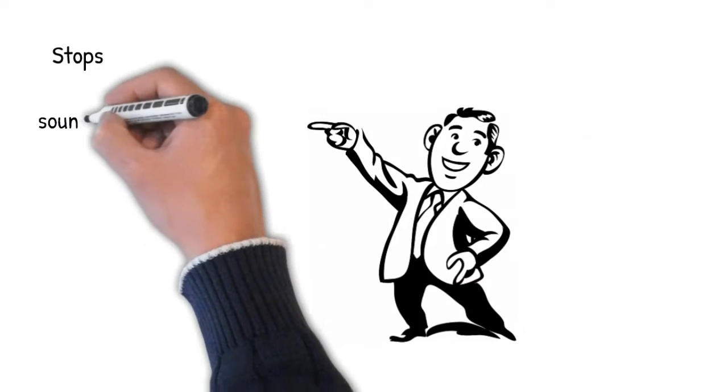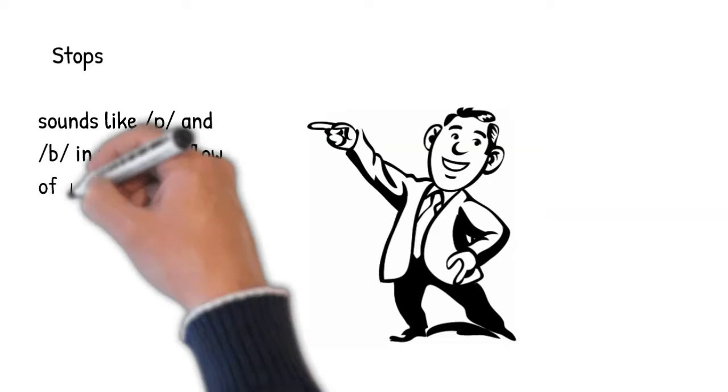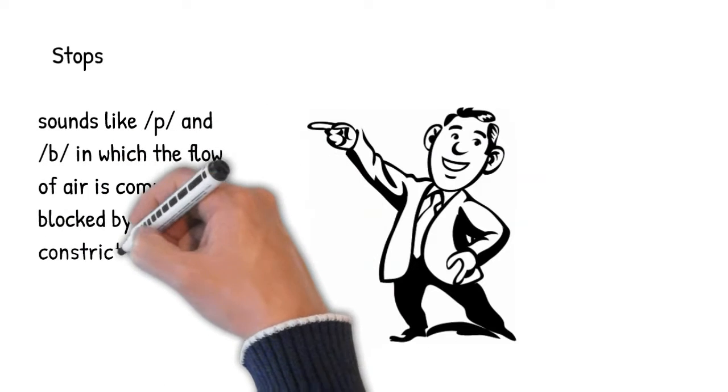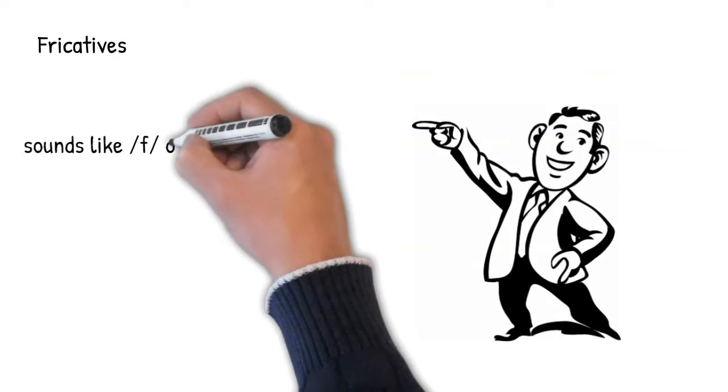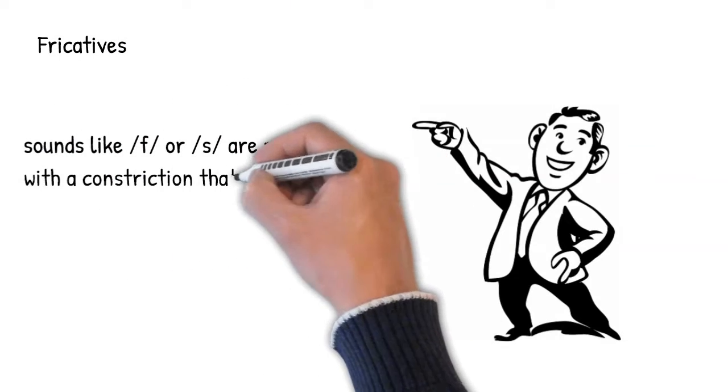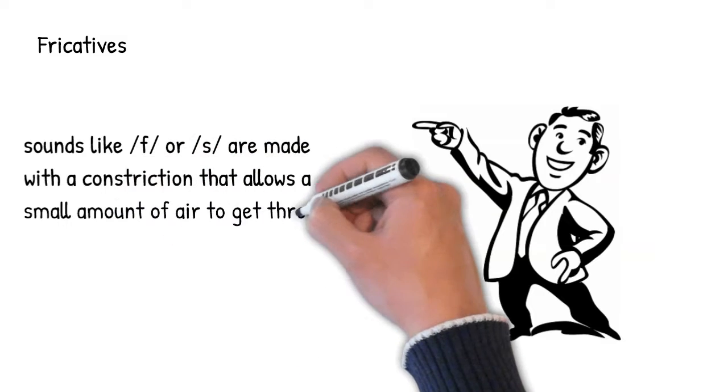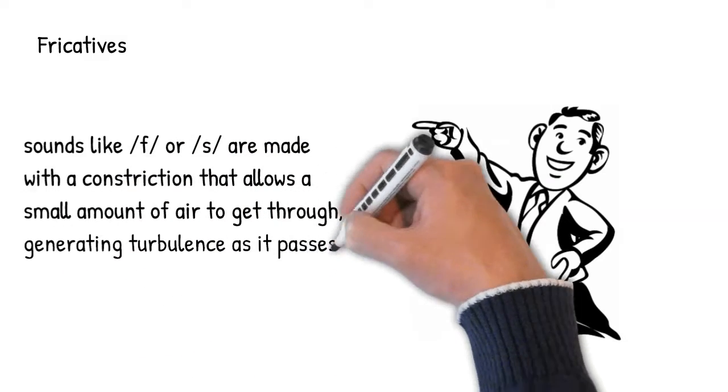Stop sounds are obstruents that are characterized by a complete blocking of the flow of air in the oral cavity. Fricatives are made with a constriction that allows a small amount of air to get through, but which generates turbulence at the point of constriction.